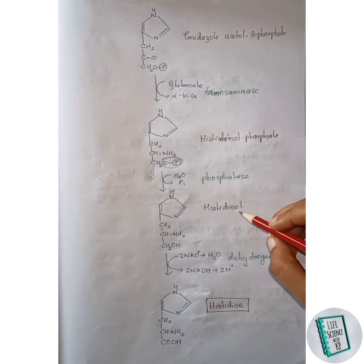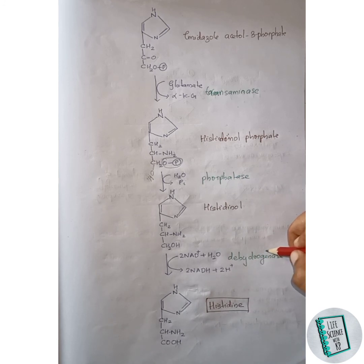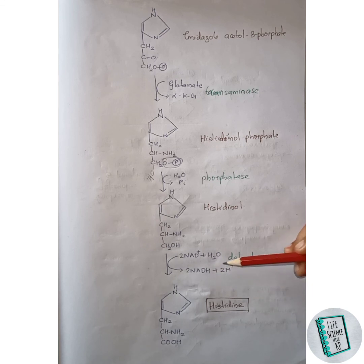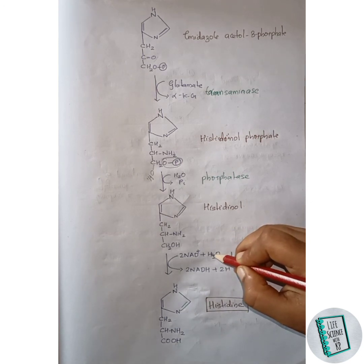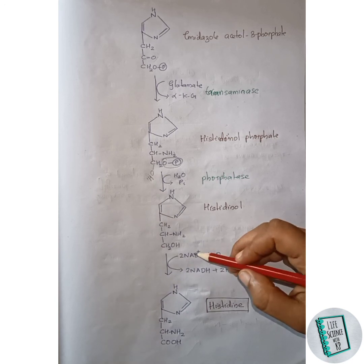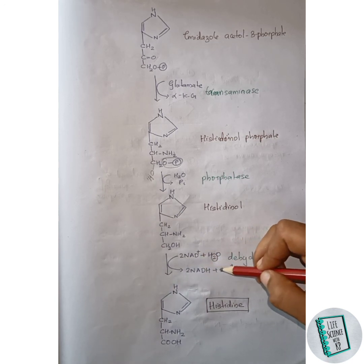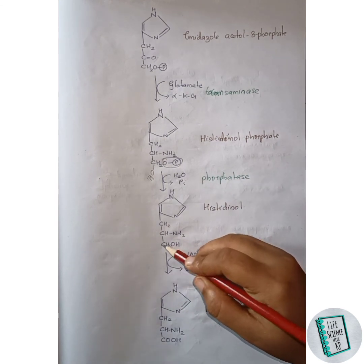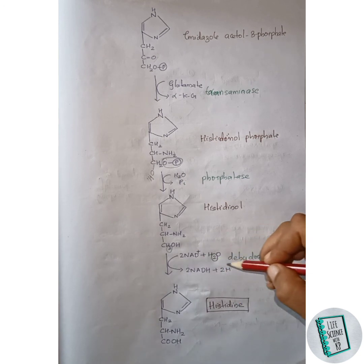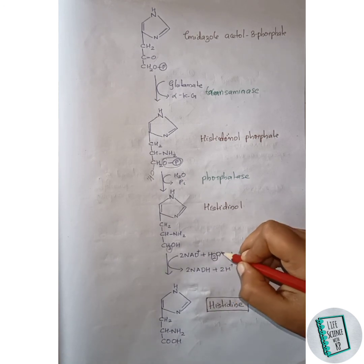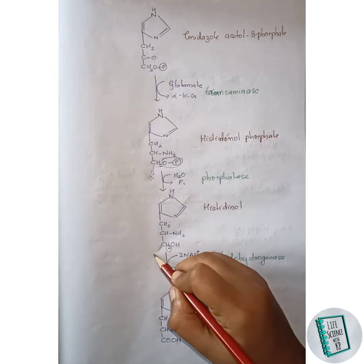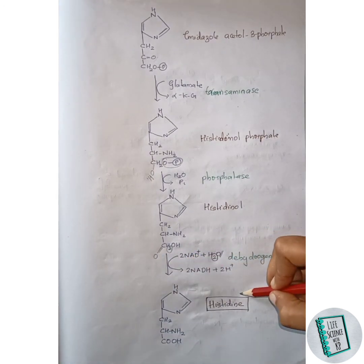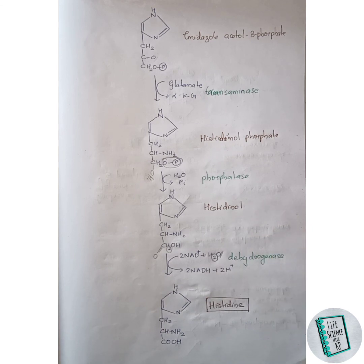In the next step, histidinol gets converted to histidine in the presence of dehydrogenase enzyme. Two molecules of NAD+ are converted to two molecules of NADH + H+, and water is added. Two hydrogens of water go with one NAD+ as NADH + H+, the two hydrogens attached to the carbon leave with another NAD+ as NADH + H+, and the remaining oxygen of water attaches to the carbon as a double bond C=O. Thus histidine is formed. This is all about the synthesis of histidine.